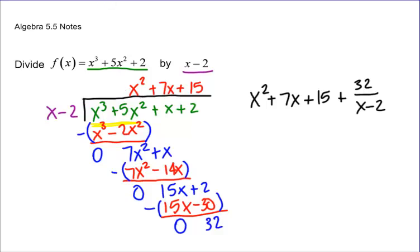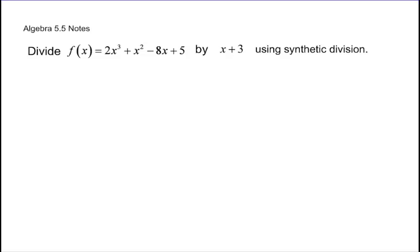If you need to write that down off on the side, do it. Synthetic division is really close to synthetic substitution, which we did earlier this year. To do this, we take x plus 3 and set it equal to 0 to find what x equals. Once we find what x equals, we put it in its little house over here. Then we set up a problem just like synthetic substitution.